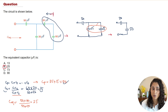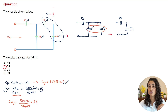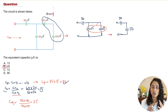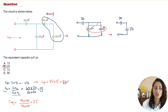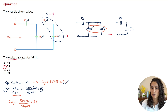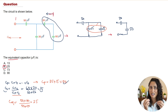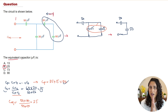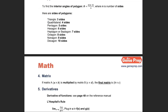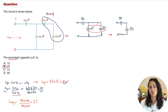To summarize this type of problem: always start from one end of the circuit, identify which capacitors, resistors, or inductors are in parallel or series, draw the simplified version, and repeat until you find the equivalent. It's very important to follow these steps, and make sure you add them to your cheat sheet so you don't forget them on the FE exam.